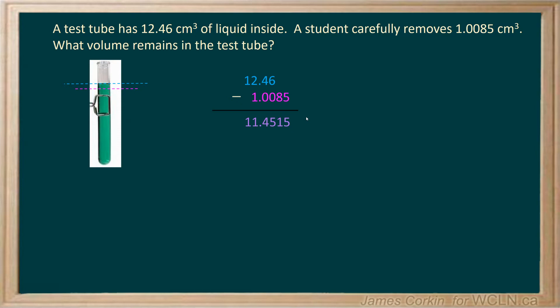Now this is an adding or subtracting example so what matters is the placement of the significant figures. If I look at 12.46 the last significant digit is here whereas in the number we're subtracting it's over here.